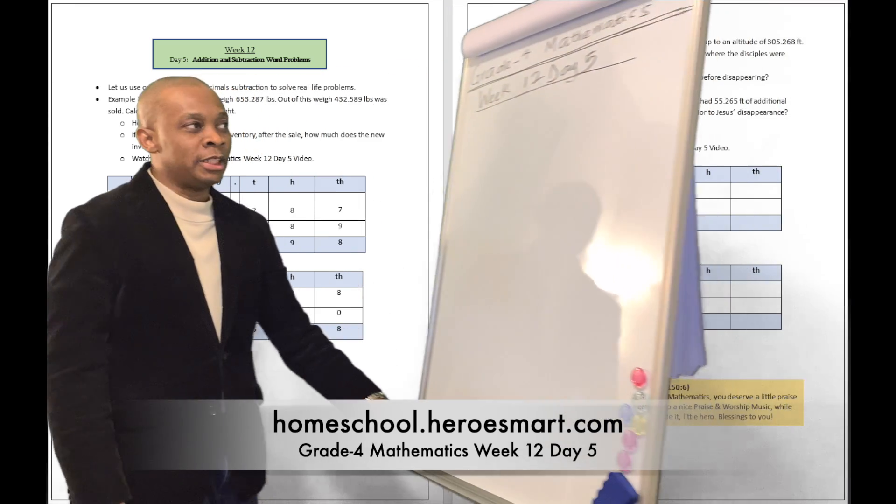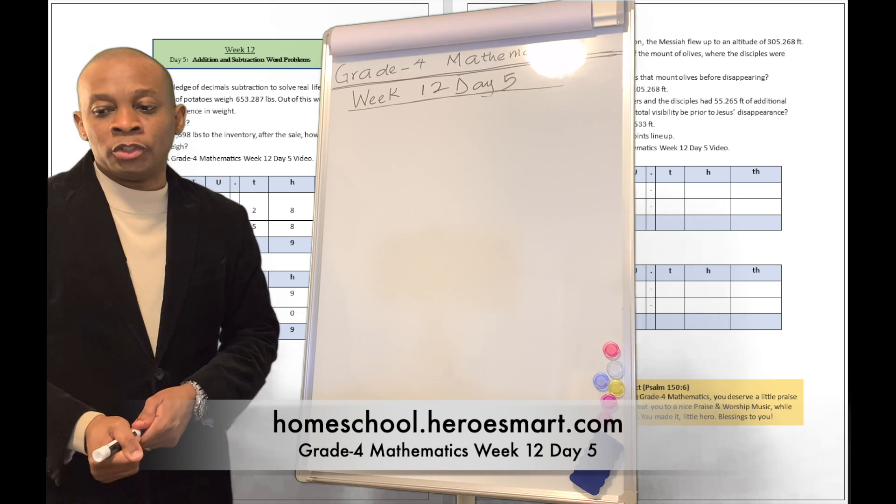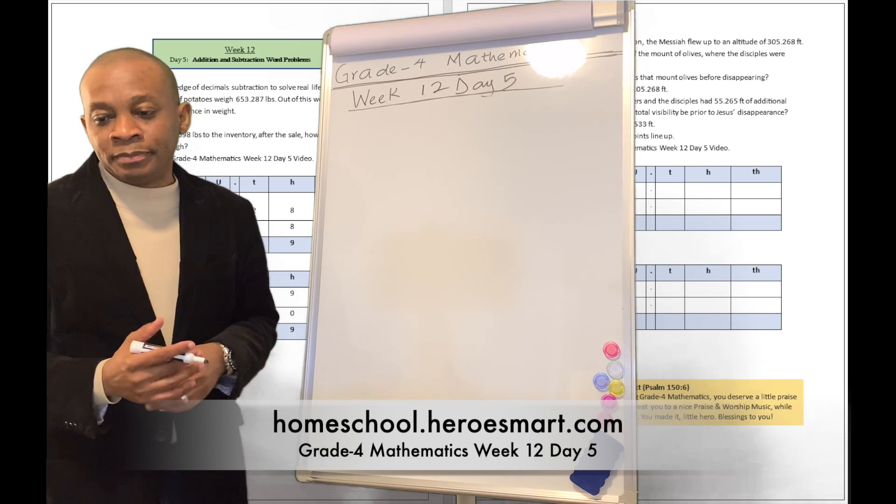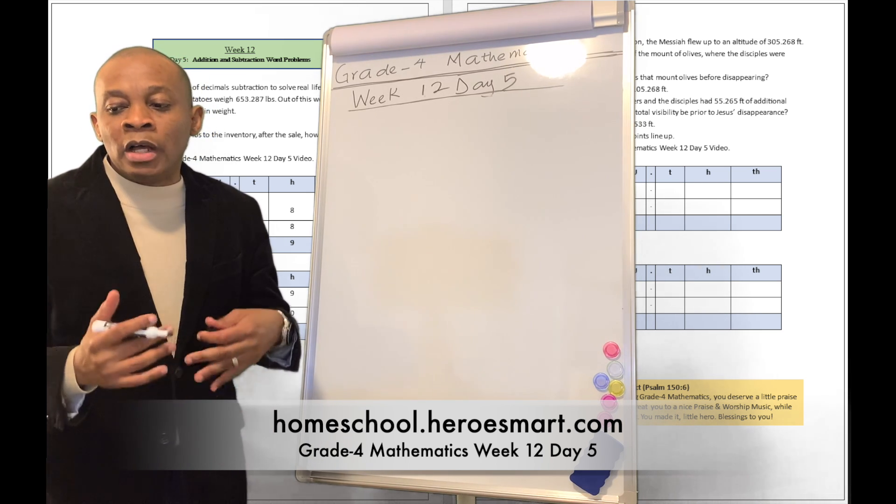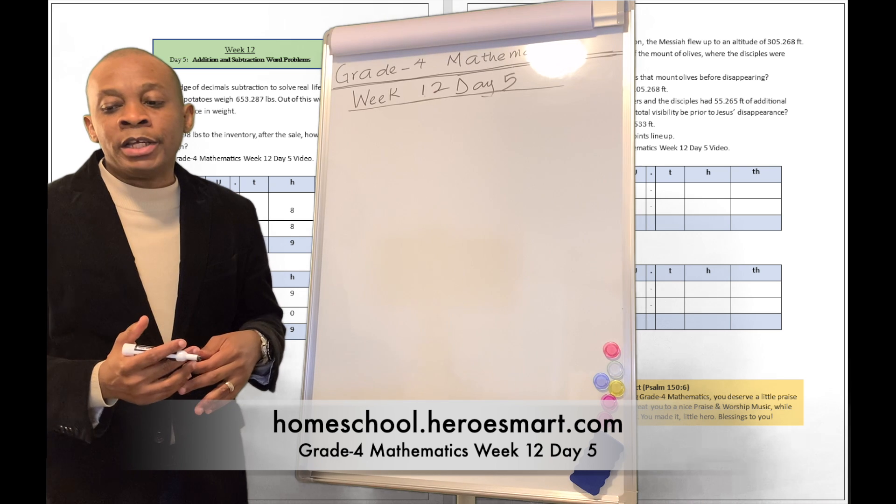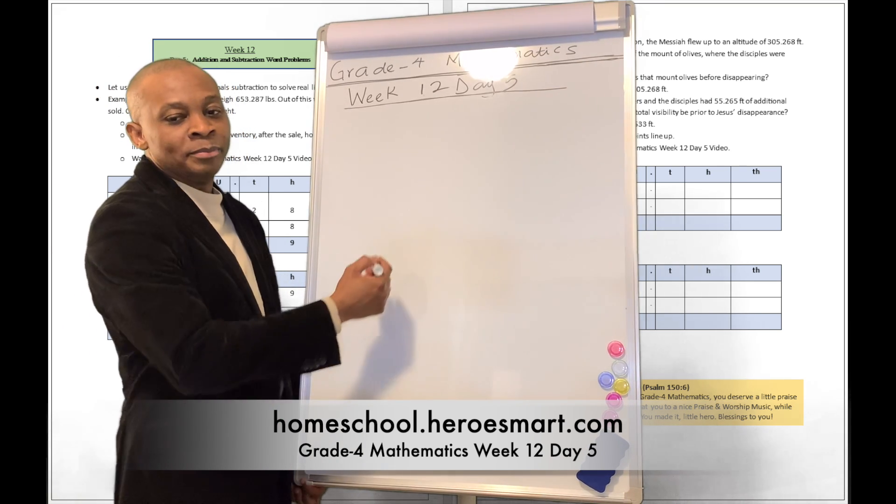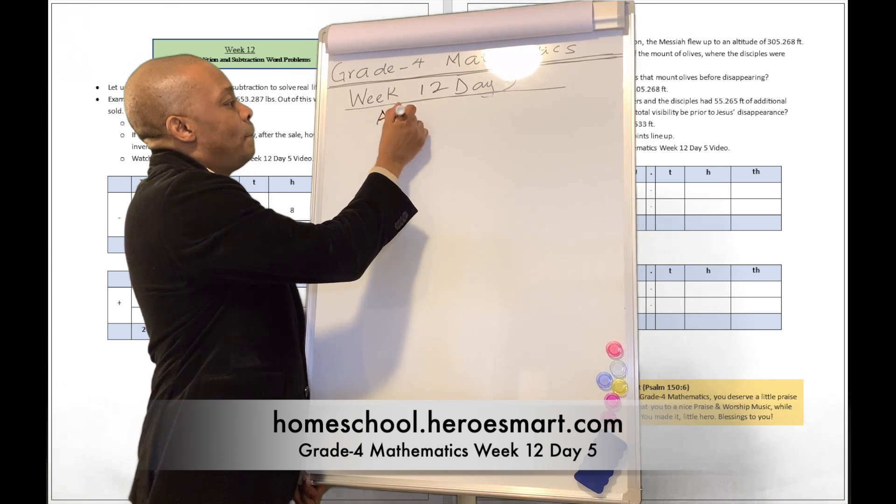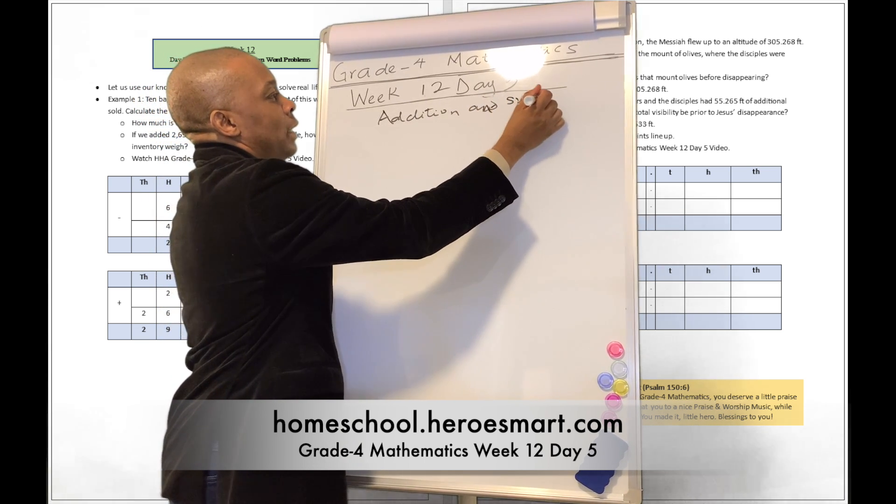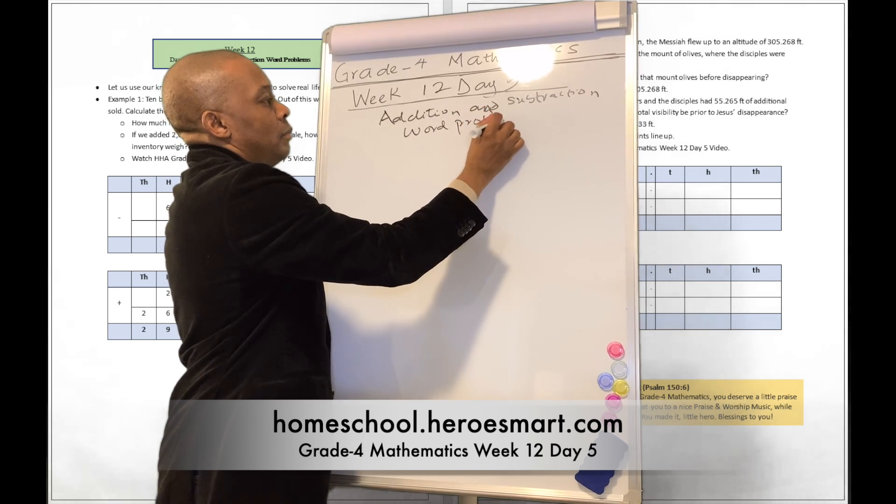All right, so here is our board. And the problem states that, assuming that after his resurrection, the Messiah flew up to an altitude of 305.268 feet before disappearing outside. If the Mount of Olives where the disciples were watching was 200 feet high, how much higher was Jesus than the Mount of Olives before disappearing? Well, that's a fun problem. So this is addition and subtraction word problems.